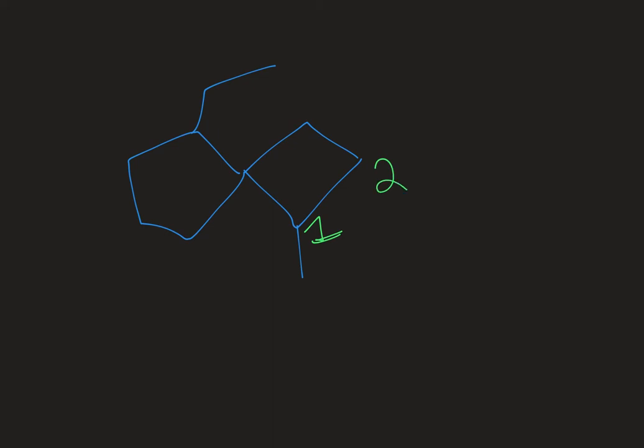So then I would go around the ring two, three, four. Now that I'm at the shared carbon I can either go up or I can go down. And so if I go up I will hit that ethyl substituent sooner giving it a smaller locant which is preferable. So I would go up five, six, seven, and eight. So this is a spiro octane.